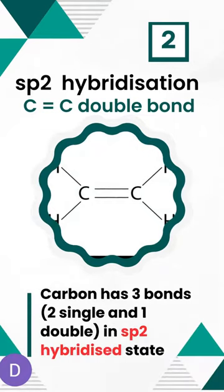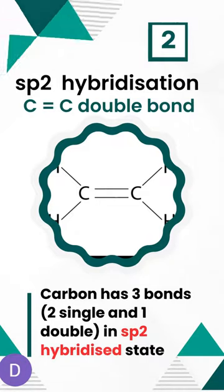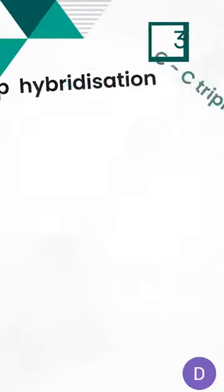Number 2: SP2 hybridization. A carbon-carbon double bond has three bonds — that is, two single bonds and one double bond.